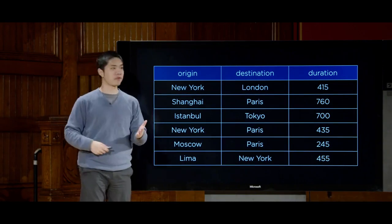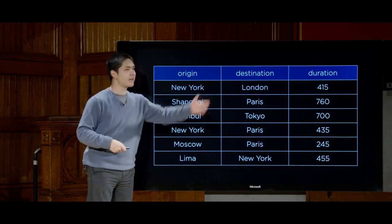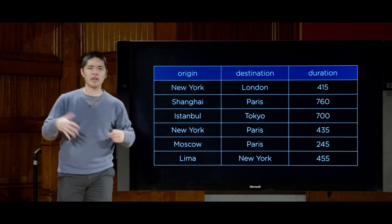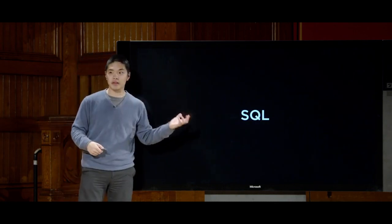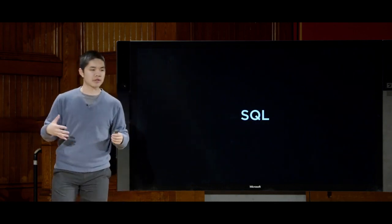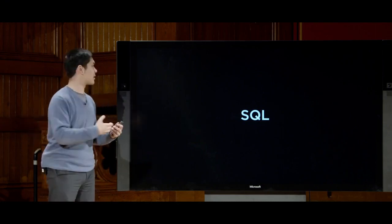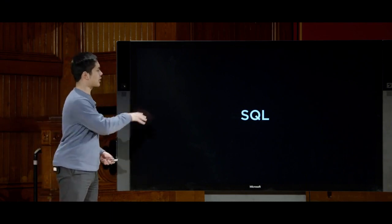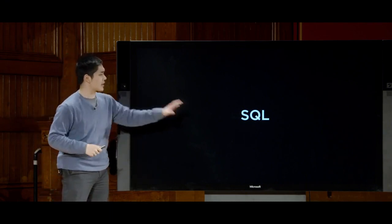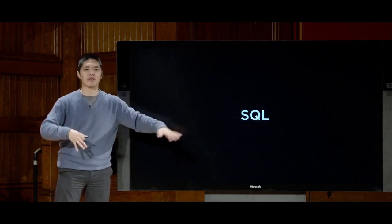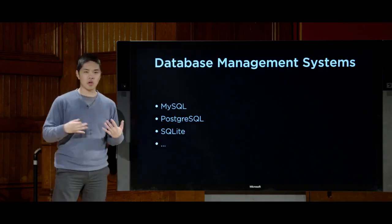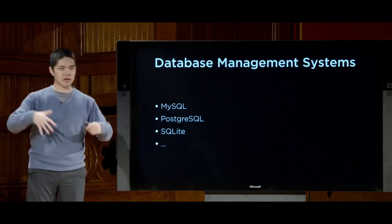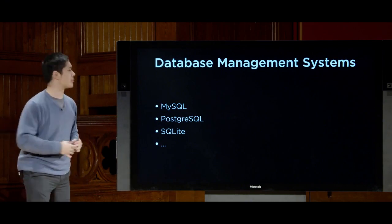SQL is a database language designed to interact with relational database management systems — databases that organize data into tables, where every table has rows and columns. There are a number of different database management systems that implement parts of the SQL standard. Some of the more popular are MySQL, PostgreSQL, and SQLite, but there are definitely others as well. Each has various different features and different use cases.